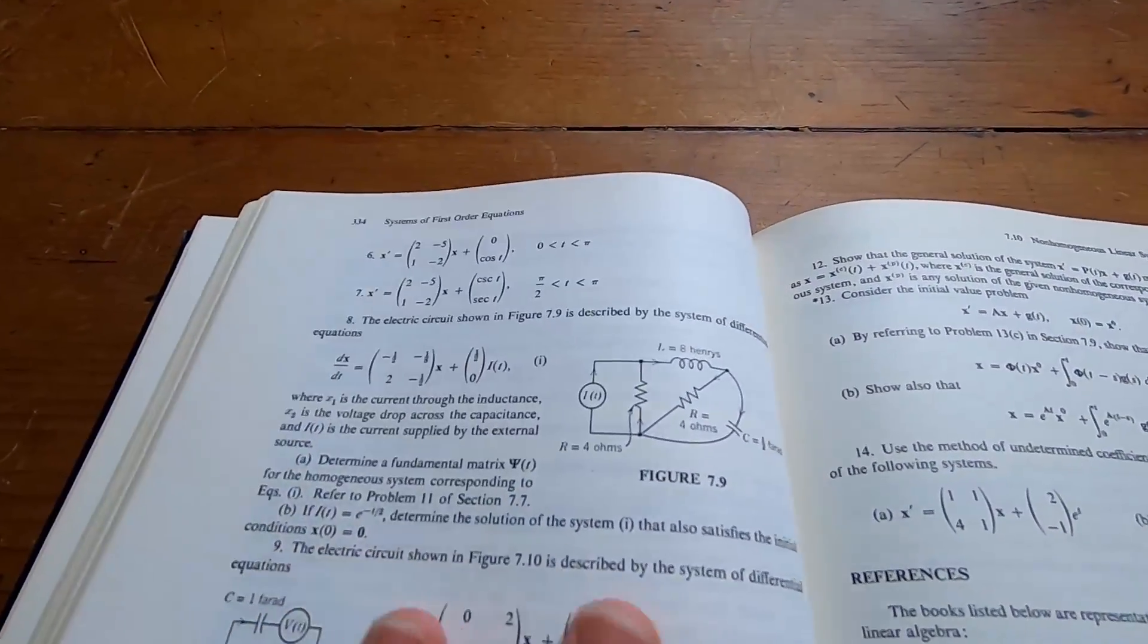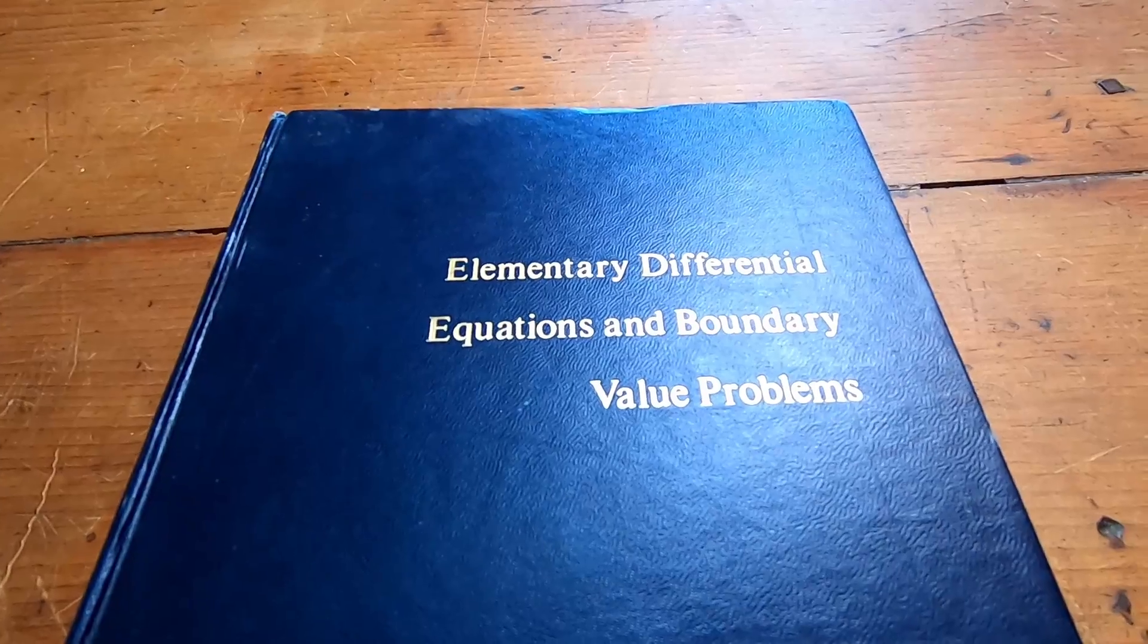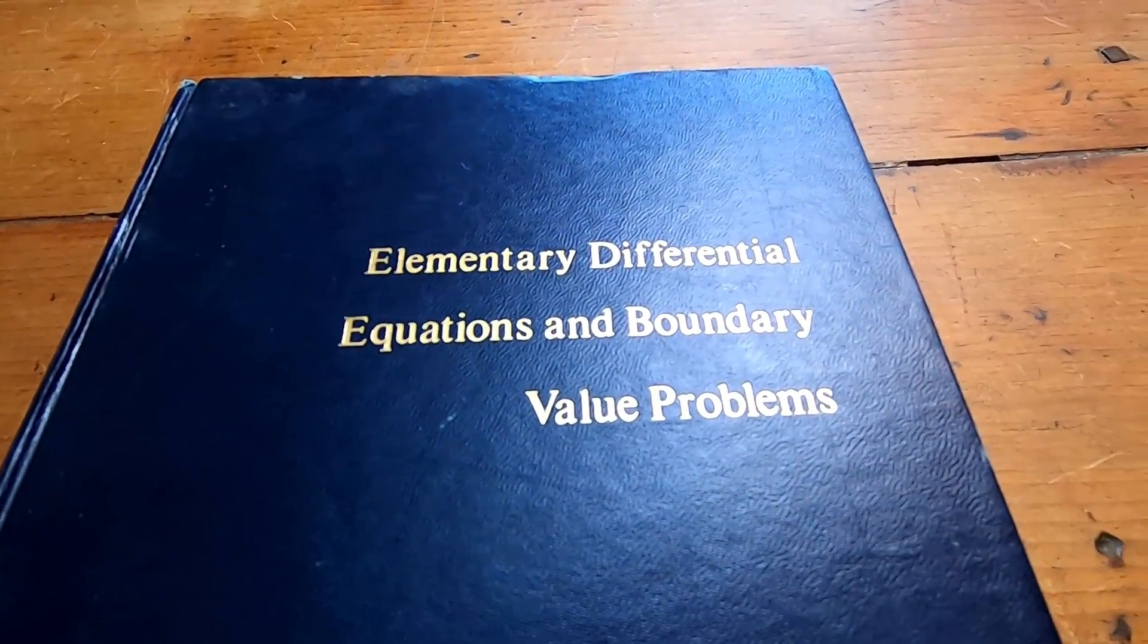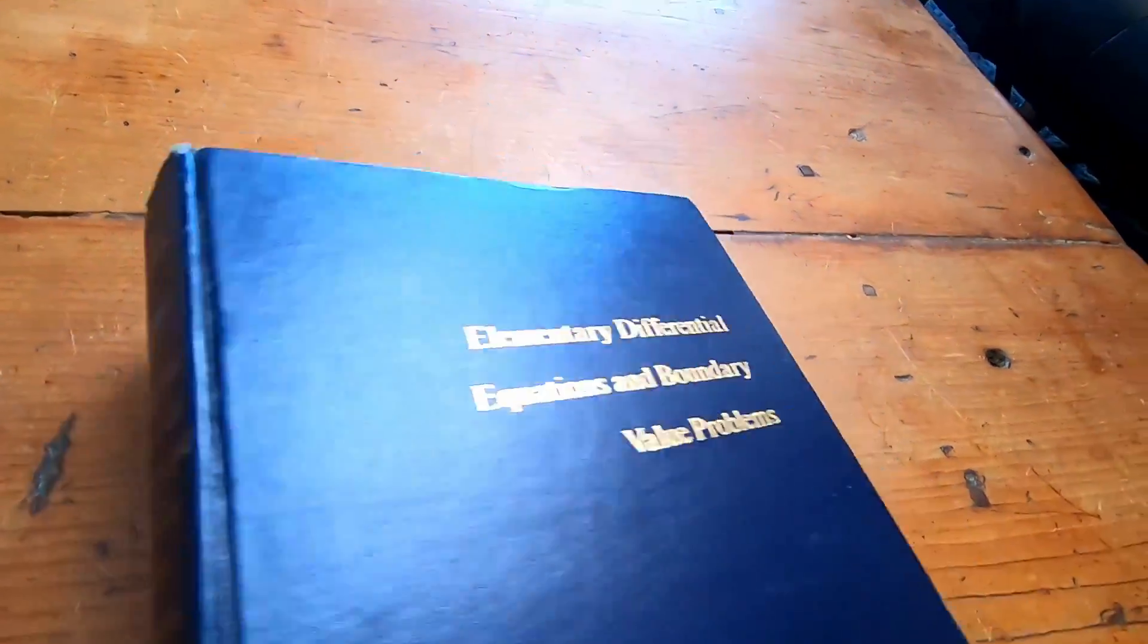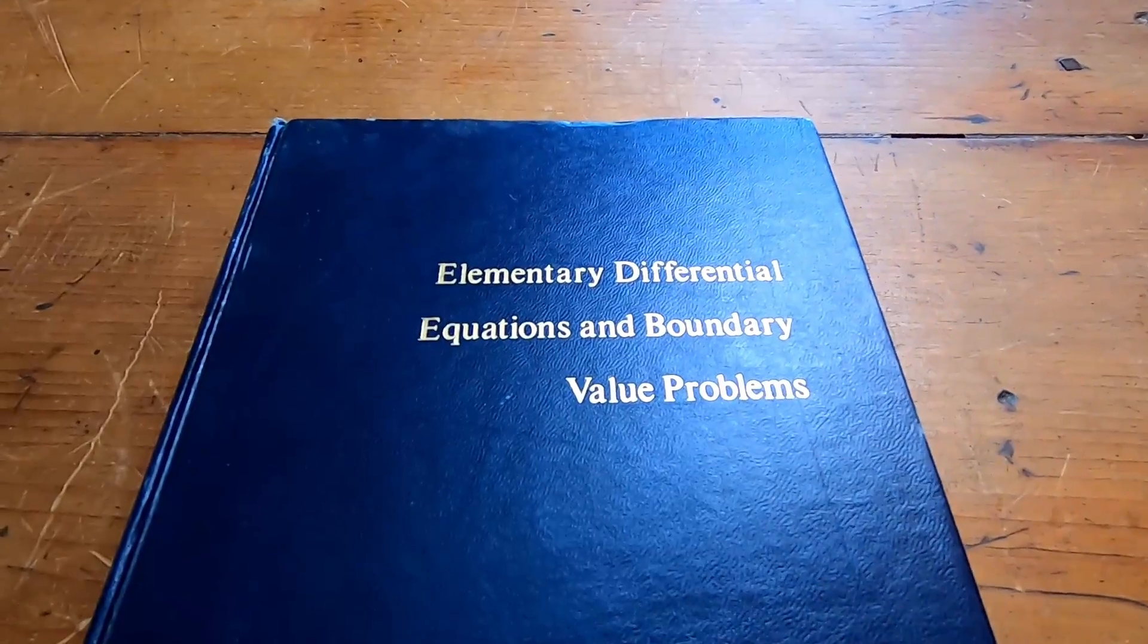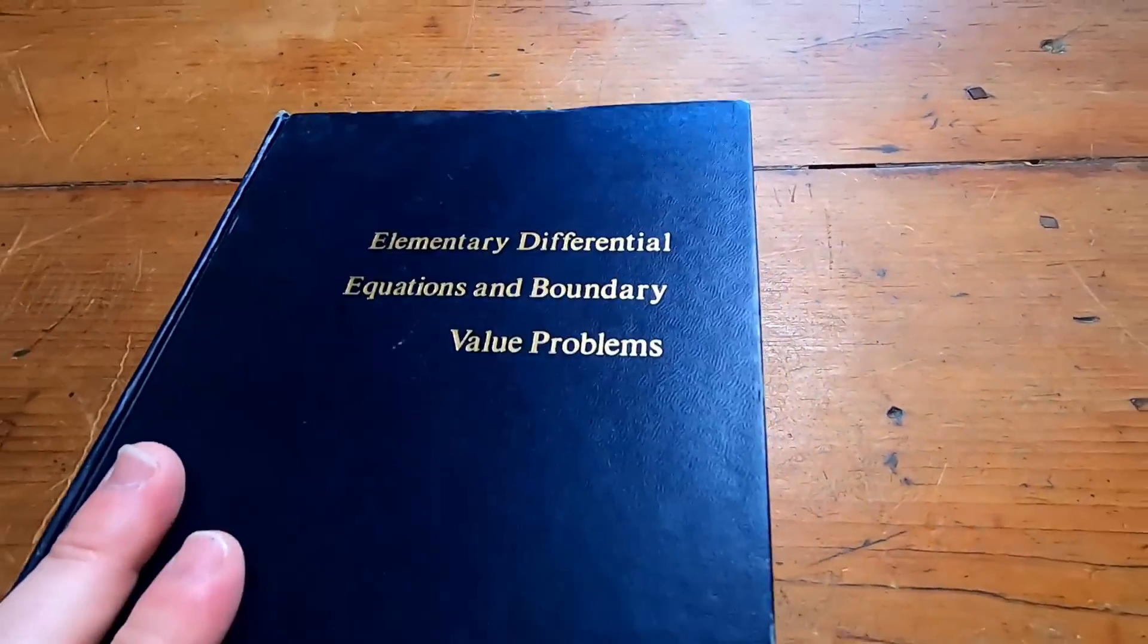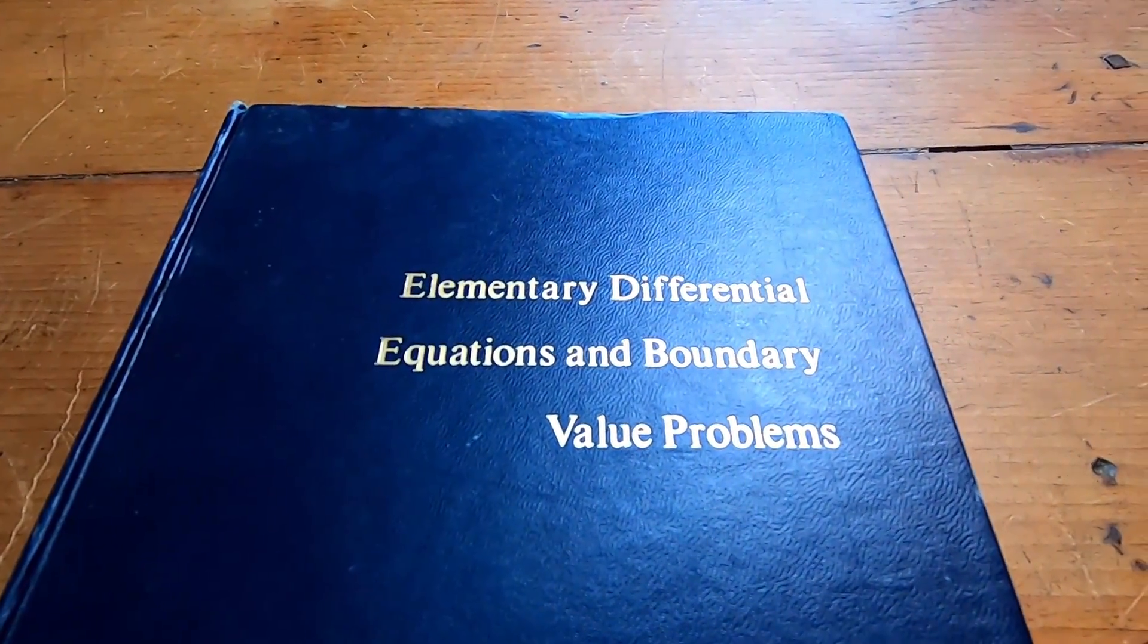But at the same time, we're lucky that we can get books so inexpensively today. Again, the book is Elementary Differential Equations and Boundary Value Problems. And this is the Boyce and Di Prima book. This is an absolute classic. And I think I'm going to stop this video now and I'm going to sit down and read a little bit of it because just even making this video is making me think like, wow, I really want to read this book some more. Good luck.